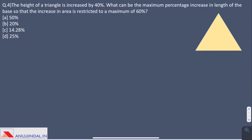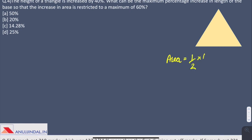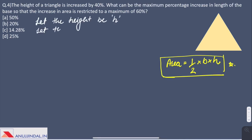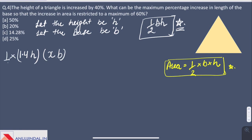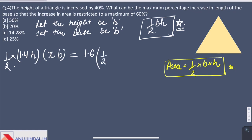Question 4. The height of a triangle is increased by 40%. What can be the maximum percentage increase in the length of base so that the increase in area is restricted to a maximum of 60%? Area of triangle is half base into height. Let us assume height is H and base is B. So the area is half BH. Now the height has been increased by 40%, so the new height becomes 1.4H. Let the increment in base be X times B. This is the new area and the maximum increase could be 60%, so 1.6 times of the initial area.